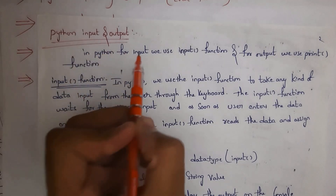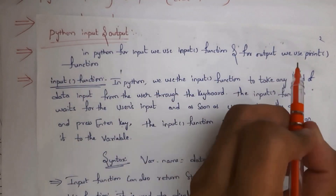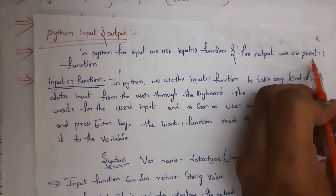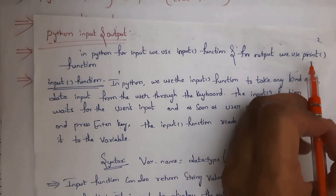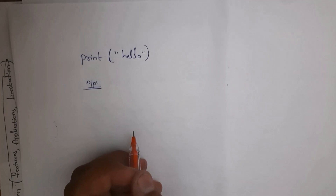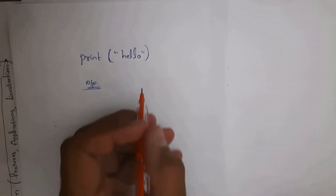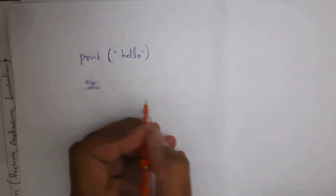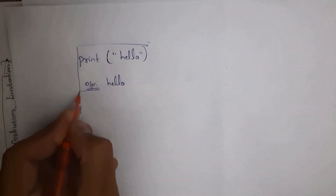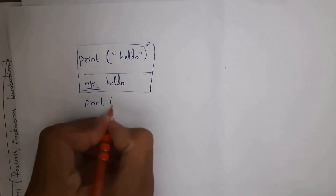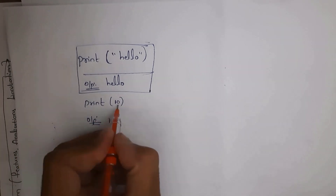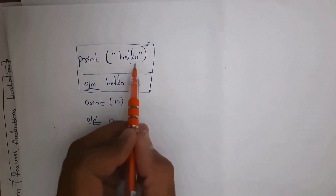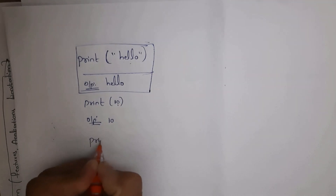For input we use the input function, and for output we use the print function in Python. First, I'll explain the print function with examples. Here, inside print I've written the text 'hello' in double quotations — strings must be in double quotations. When you execute this program you get output 'hello'. For integers, like print(10), there is no need for double quotations — only strings require them.